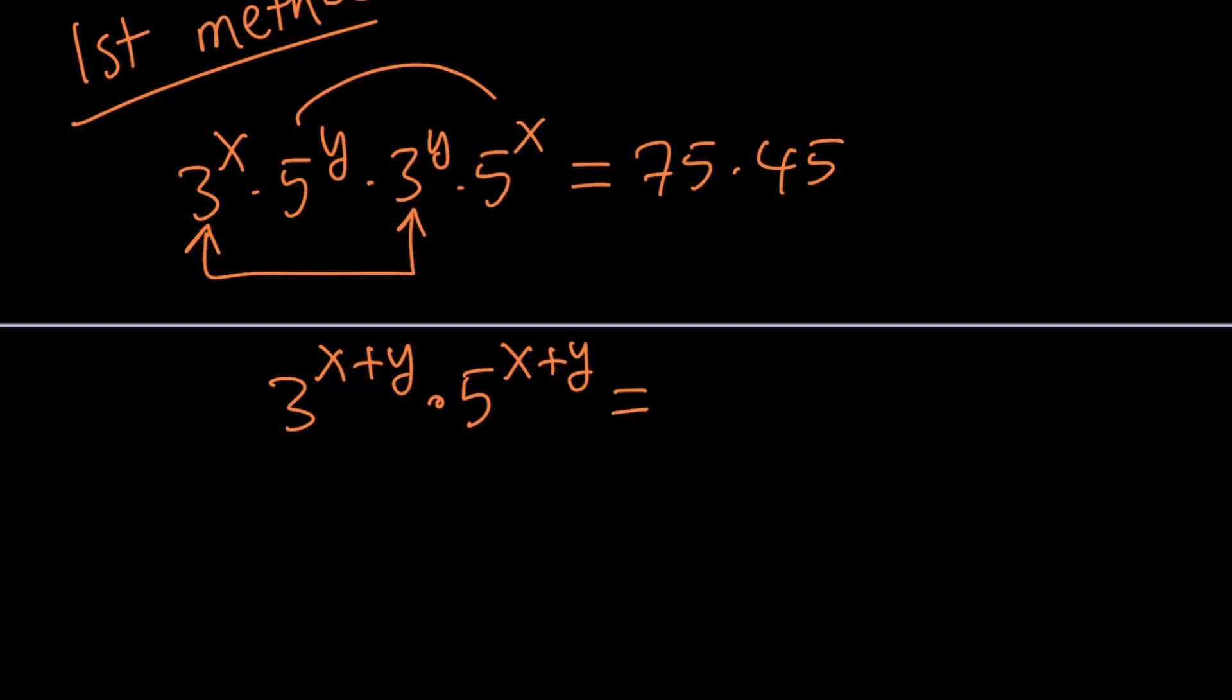And now on the right hand side, I want to break it down into prime factors. That would be 3 times 25, so 3 to the first power times 5 to the second. And 45 can be written as 3 squared times 5 because it's 9 times 5.